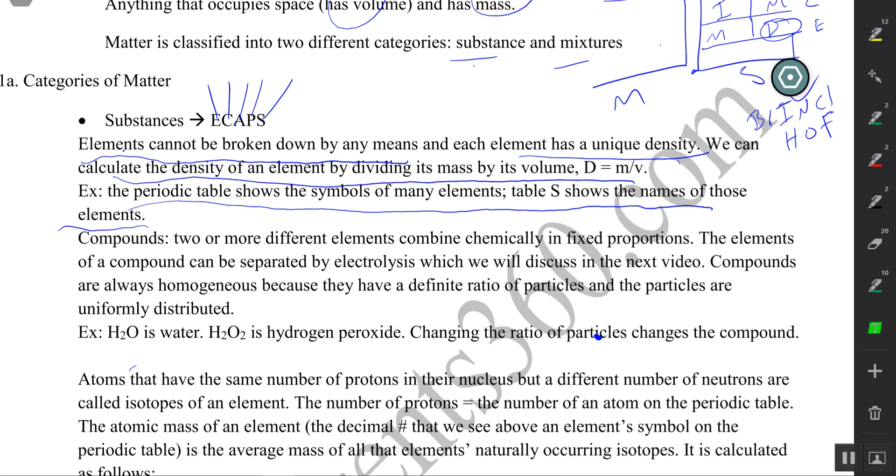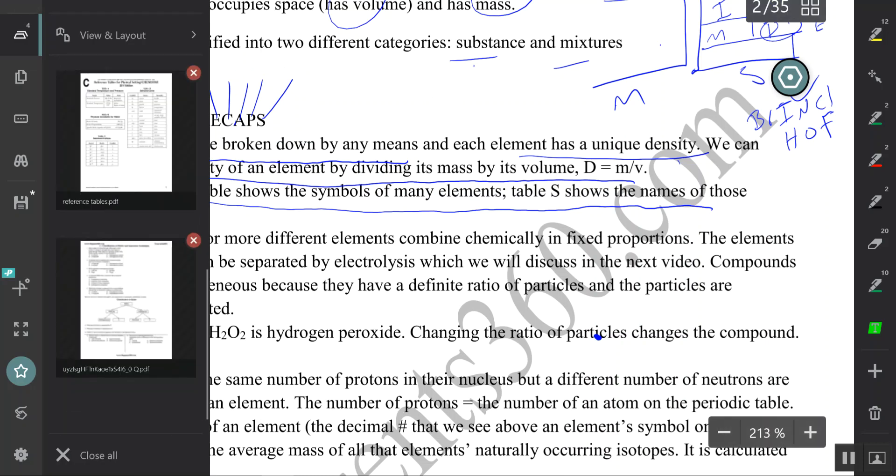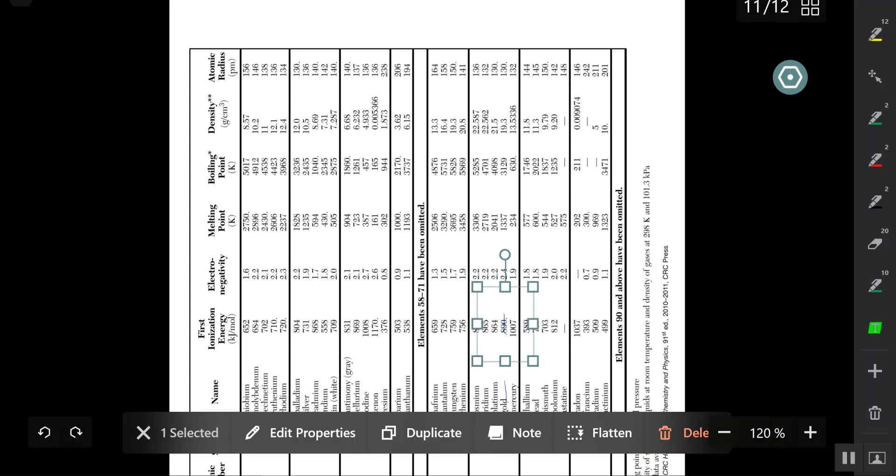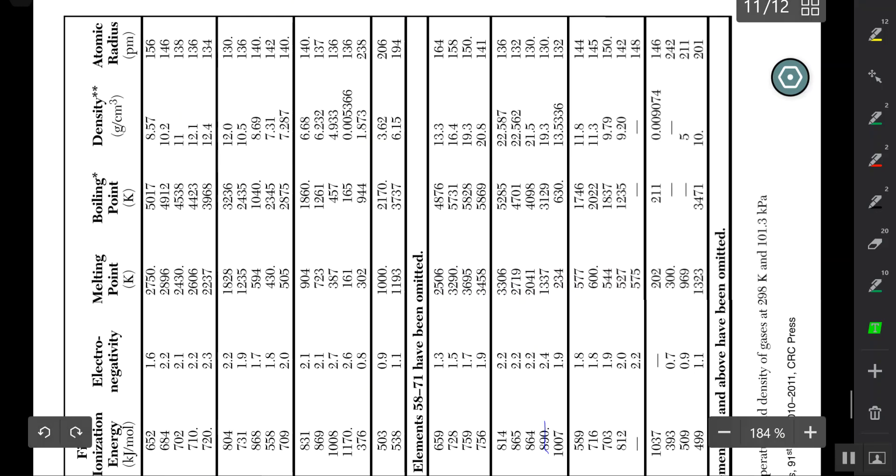Density is considered an identifier of an element. So if I'm talking about the element gold, I can go to table S, I can measure the density of gold, and if the density of the gold equals 19.3, I know I have real gold in my hands.